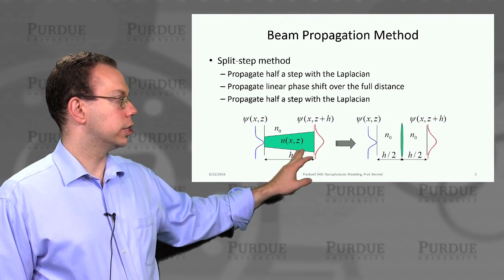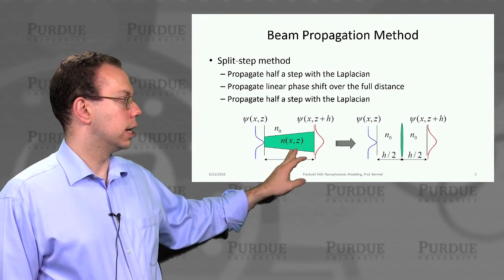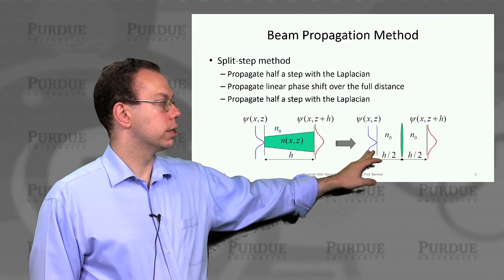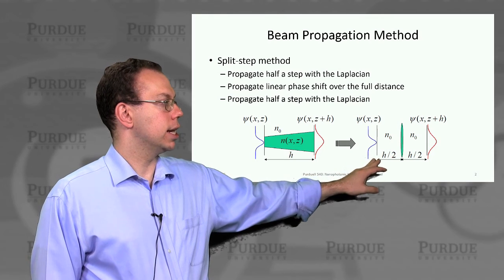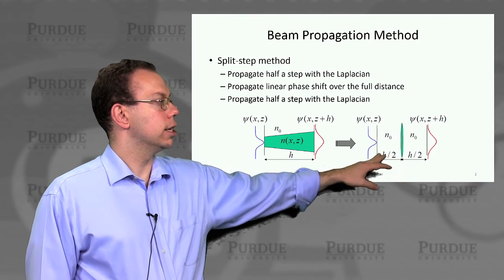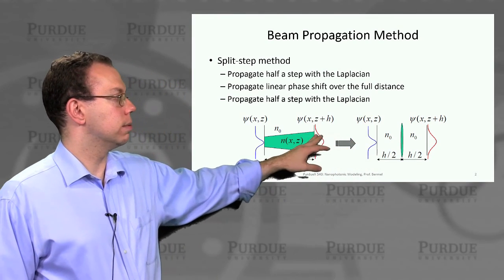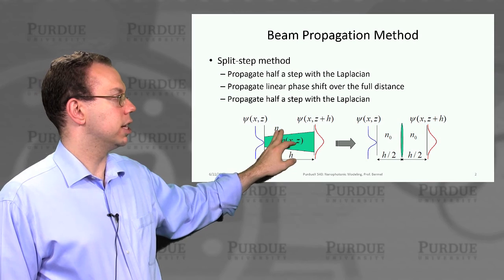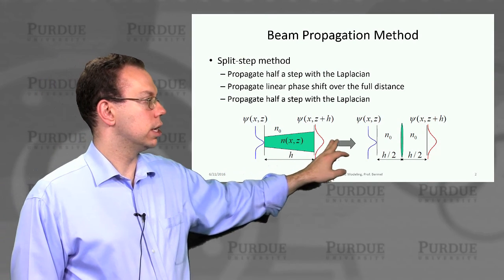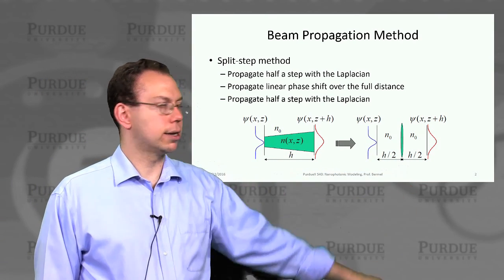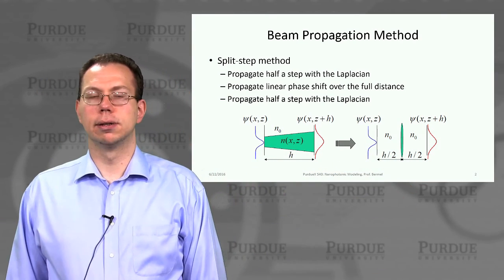This is showing basically how we're going back and forth: propagating half of the Laplacian — essentially the beam spreading — then the phase shift over the full distance, and then back to the Laplacian.